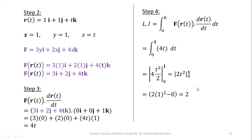To calculate the line integral for path c3 union c4, we add the results for c3 and c4: 5/2 plus 2 equals 9/2. Thank you so much for watching this video. Please subscribe to my channel and recommend it to your fellows.